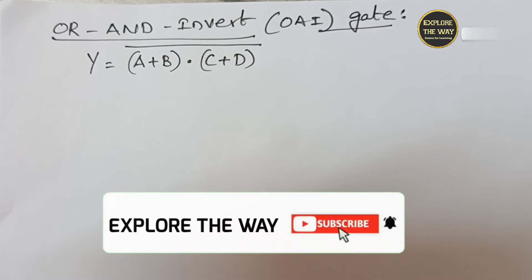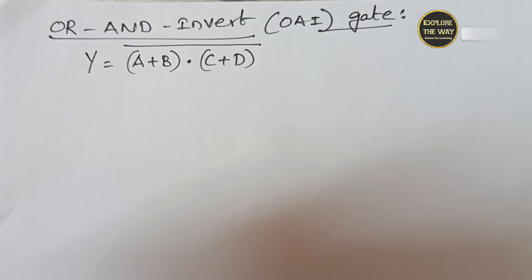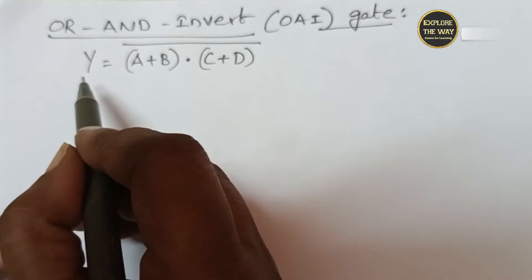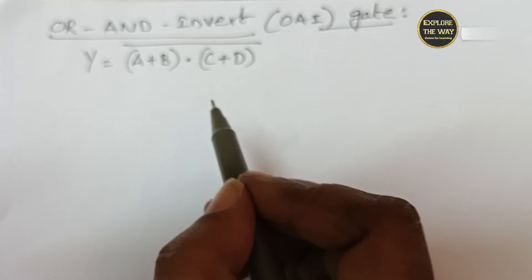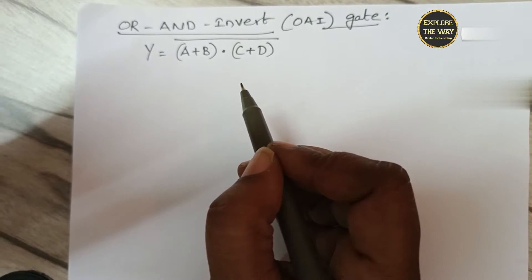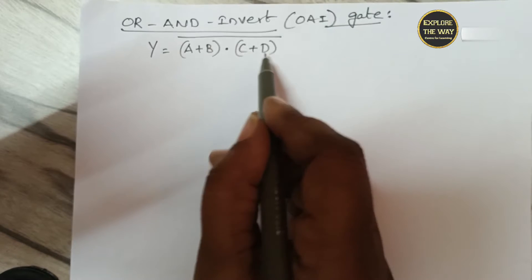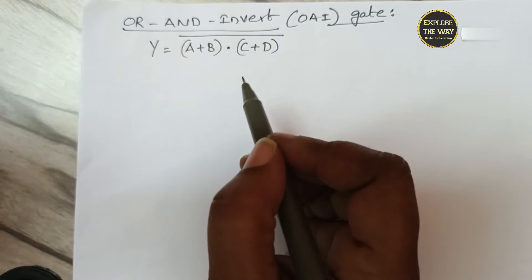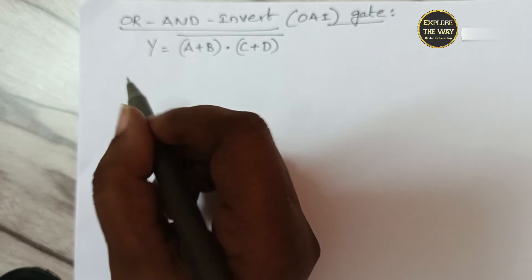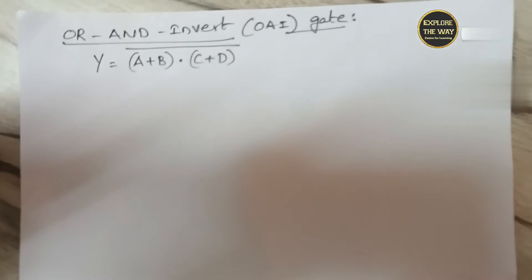Welcome to Explore the Way. In this video, I am going to explain the OAI gate, OR-and-invert gate. This is the logic function for OR-and-invert logic: Y equal to A plus B, dot, C plus D, whole bar. This OAI gate can also be used to implement complex logic functions.